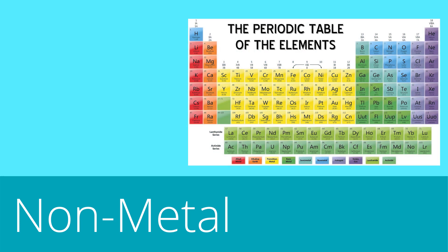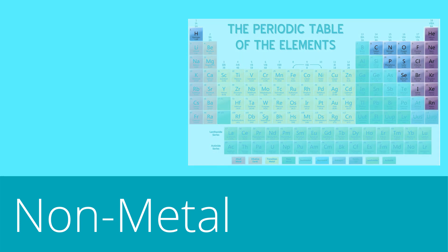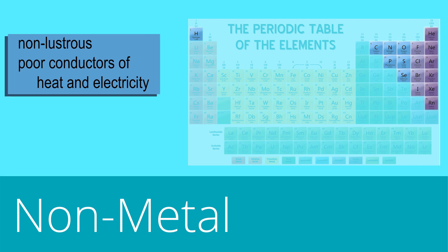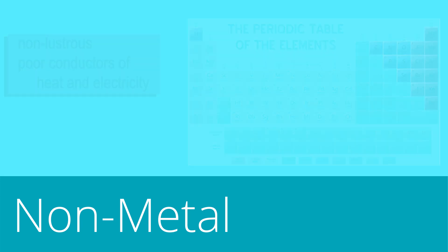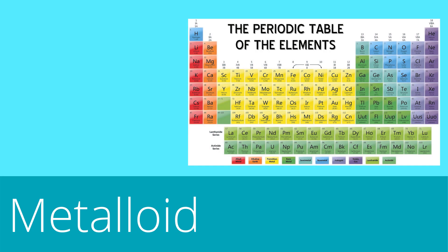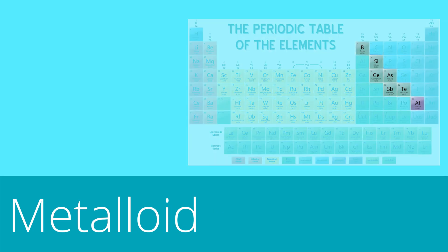Nonmetals like oxygen and chlorine are found at the right side of the periodic table. They are non-lustrous and poor conductors of heat and electricity. Semi-metals or metalloids are those elements between metals and nonmetals. Examples of these elements are boron, silicon, germanium, and tellurium. Some of these elements are used as semiconductors in the electronic industry.